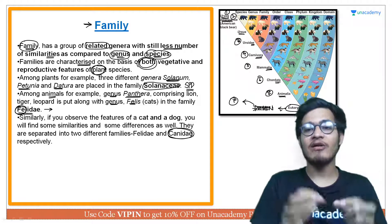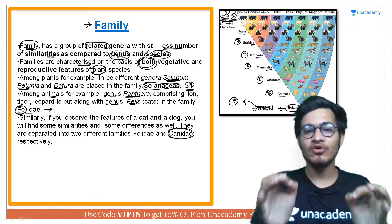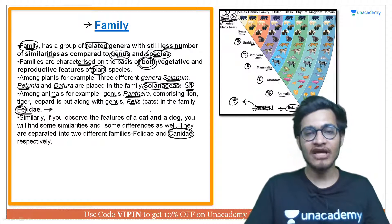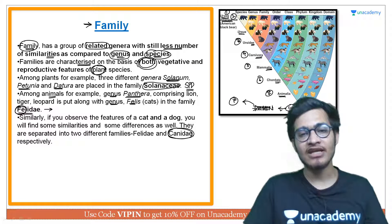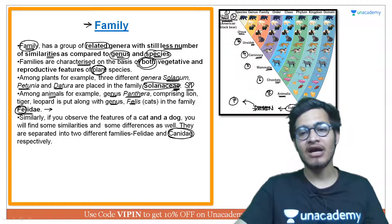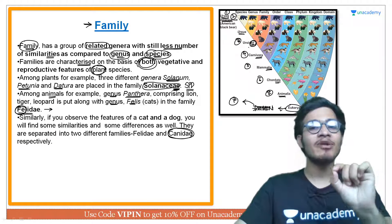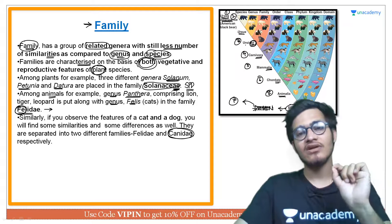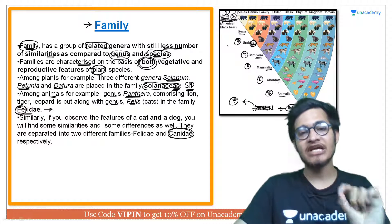This is about family. Here a suffix is commonly used — 'ae' comes at the end of the name. For example, Solanaceae ends in 'ae'. Similarly, Felidae also ends in 'ae'. These are the suffixes used for family names.